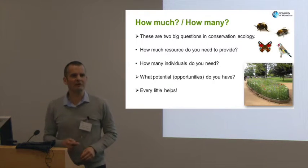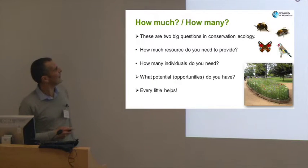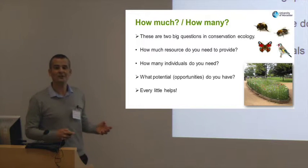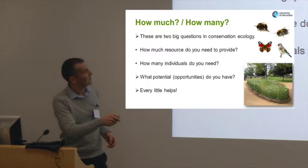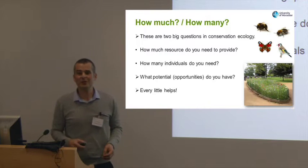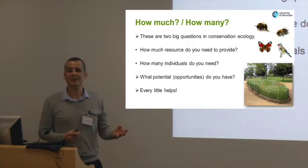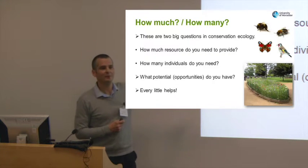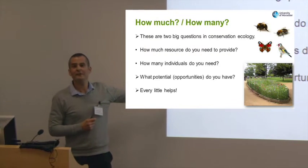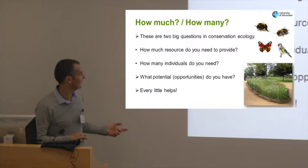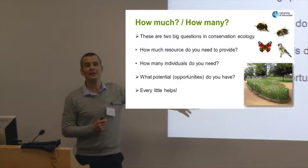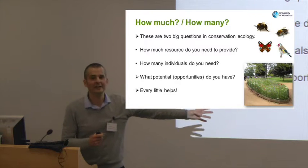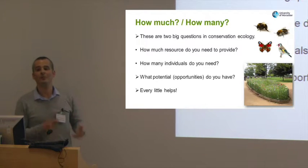Now these are two real big questions in conservation ecology: how much resource do you actually need? How much of an area of wildflower meadow do you need to actually start making a difference? The other question is how many individuals you need — as a researcher I'm involved in just how many bees we need, and the RSPB ask how many birds we need. You've got to be practical and have a pragmatic approach, as Mike's illustrated with what they've achieved at Leeds. Identify opportunities — what potential do you have at your particular site? Every little helps. This is from Cotswold Wildlife Park, where instead of having some evergreen shrubs in this border they've put in some wildflower seed. Every little bit is going to help enhance your biodiversity.